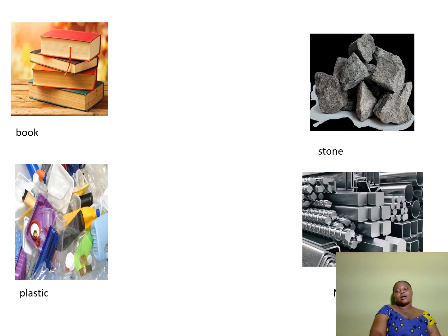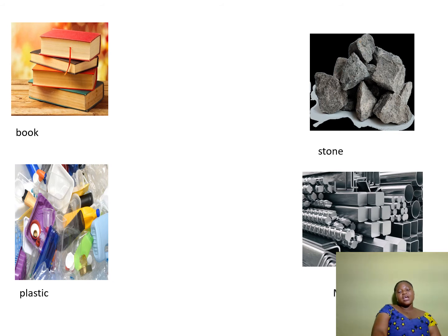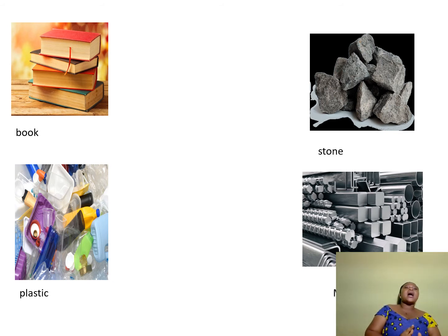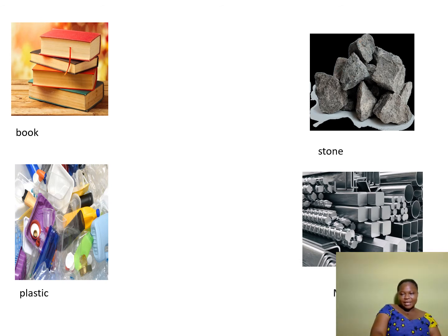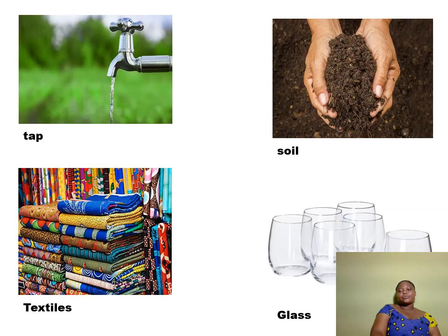And the next one is metal. Have you ever seen a metal before? A metal chair, the spoon that we use to eat — we have a metal spoon. That is a cutlery set. And we have a plastic spoon as well, but we are talking about a metal spoon. These are my examples: we also have soil, textiles, and glass. All these things are examples of materials.